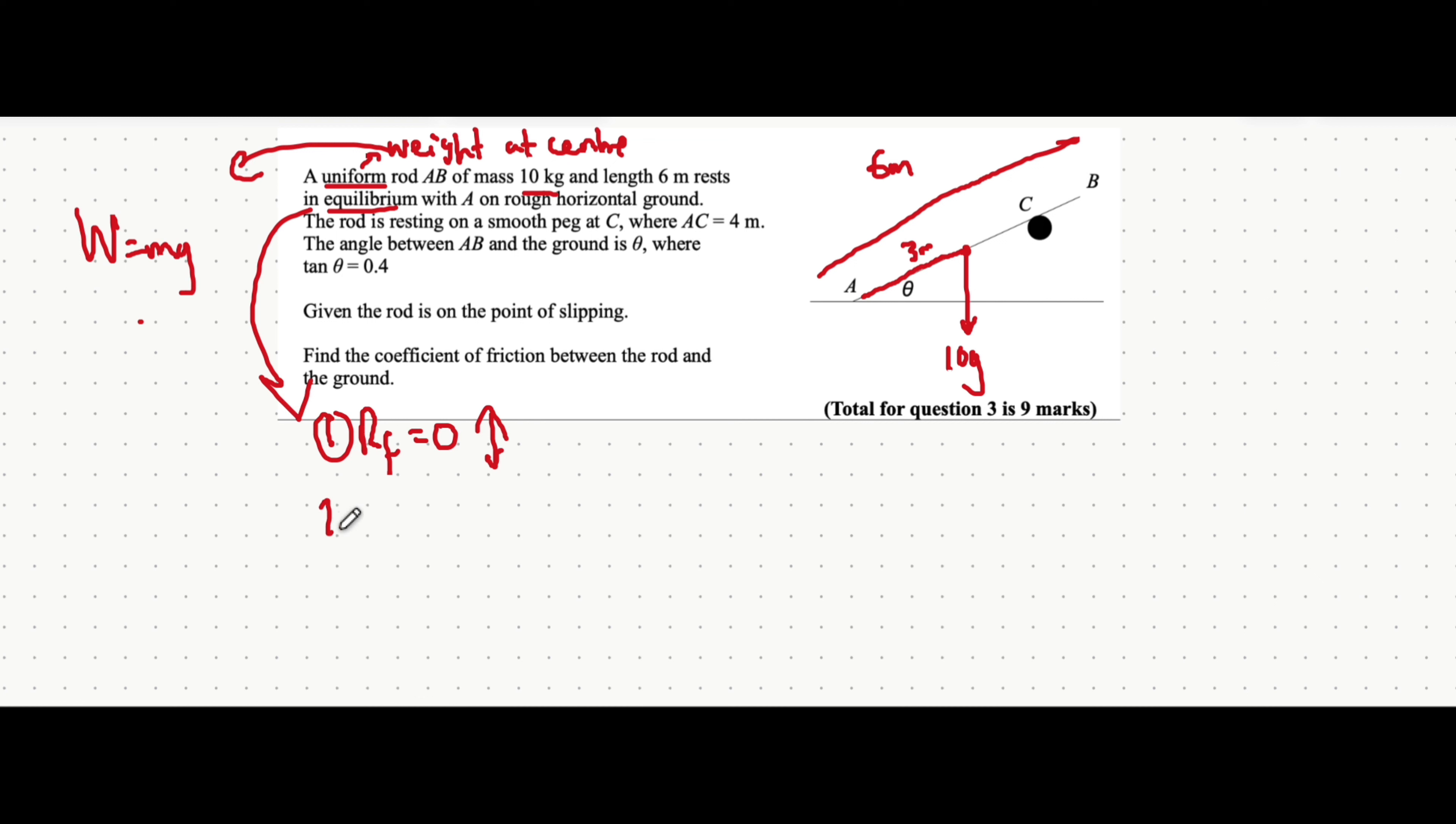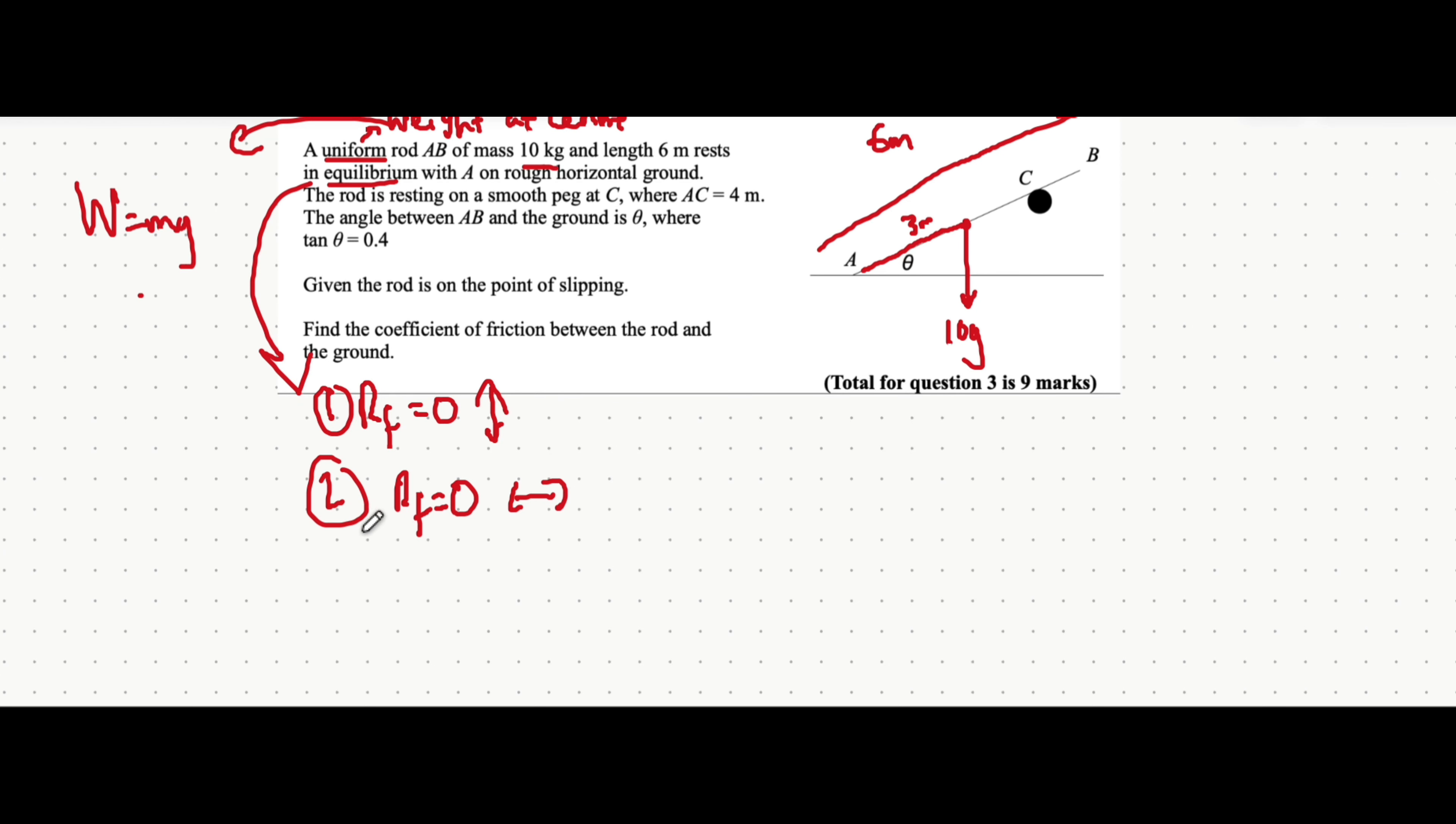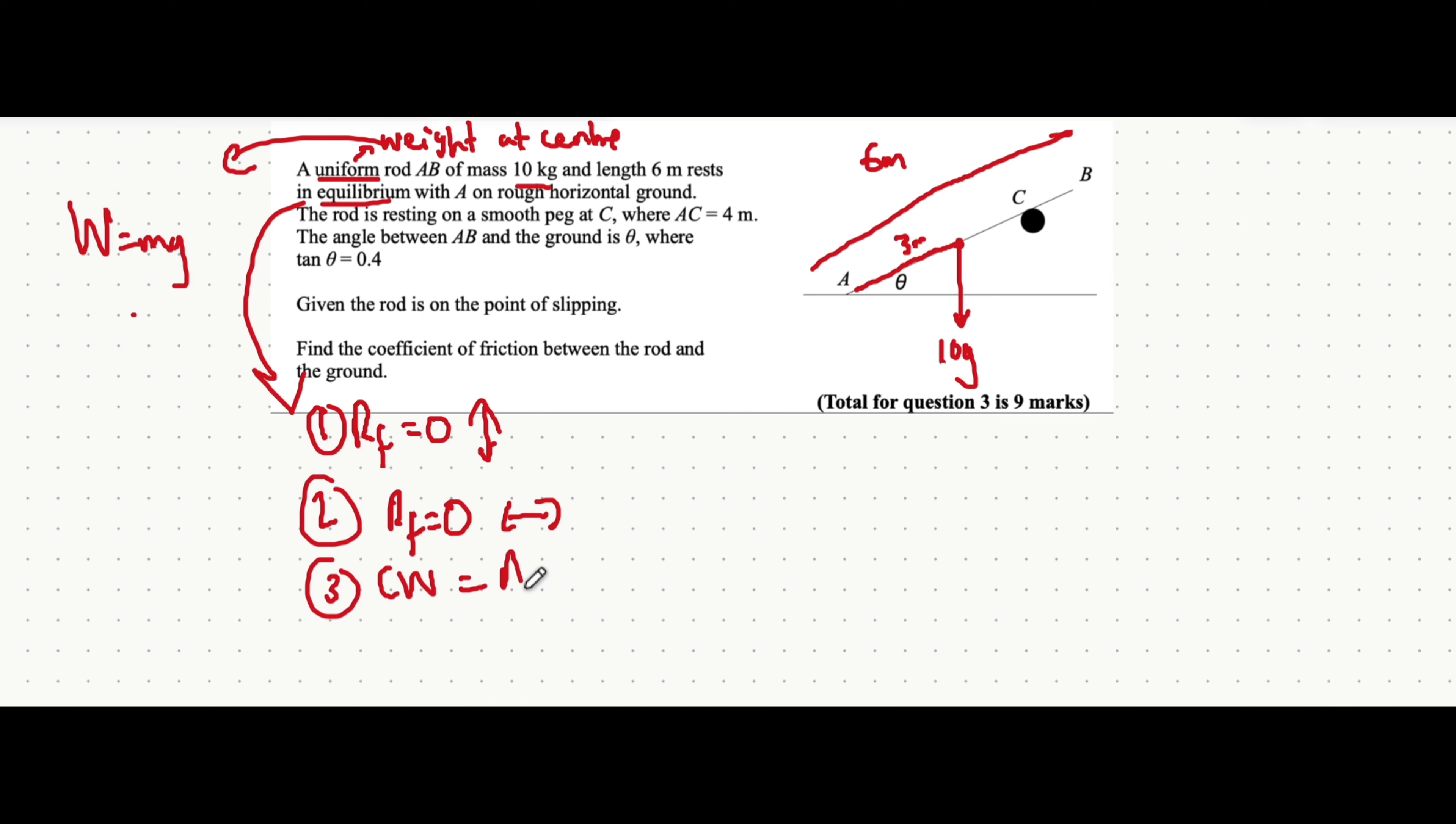Step number two, you want to use the fact that the resultant force is zero horizontally. And step number three, you want to use the fact that clockwise moments are actually equal to anti-clockwise moments.